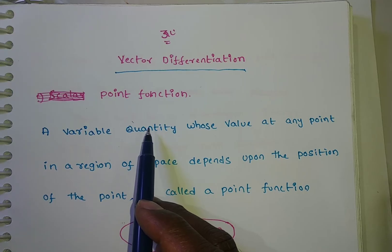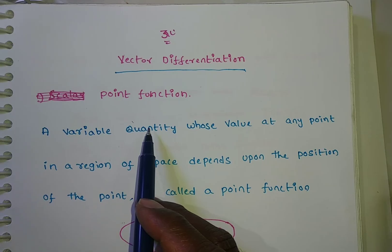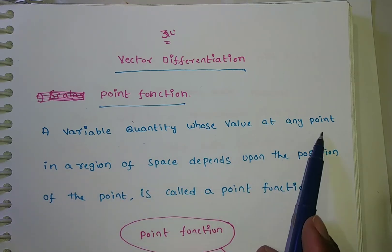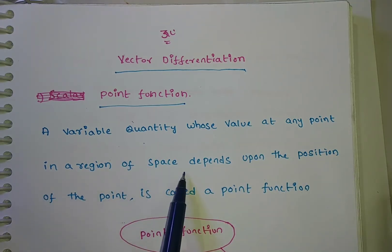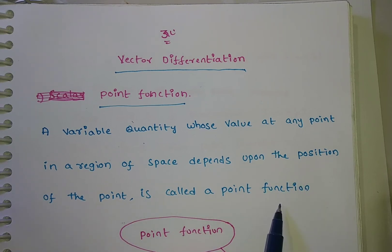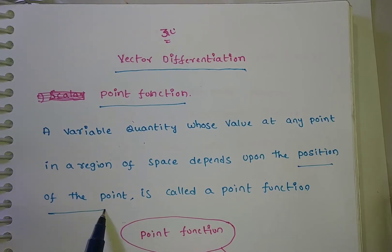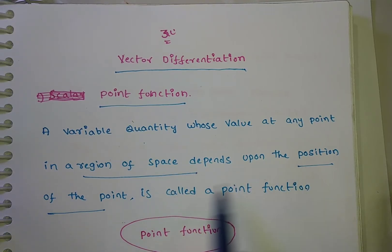Point functions are of two types: one is a scalar point function and another one is a vector point function. First, let's discuss what a point function is. A point function means a variable quantity whose value at any point in the region of space depends upon the position of the point is called a point function.